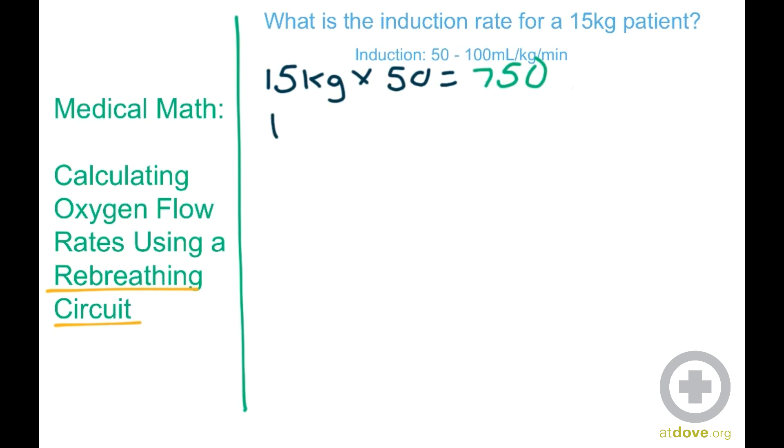And to calculate the high range, we're going to do 15 kilograms times 100, and that is 1,500.